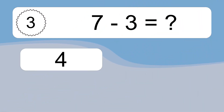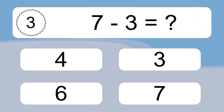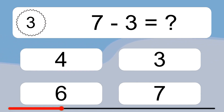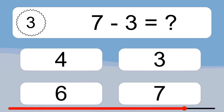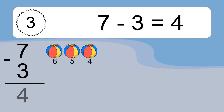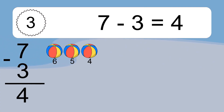7 minus 3 equals what? 7 minus 3 equals 4. Let's count it. 6, 5, 4.